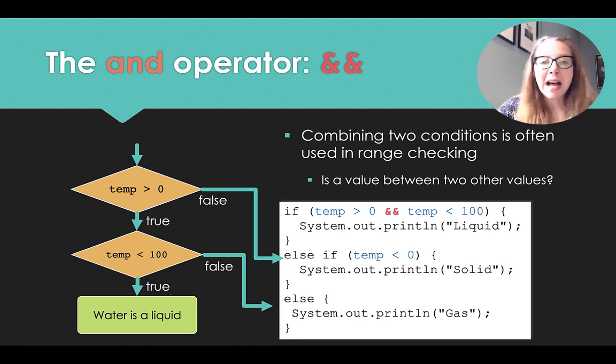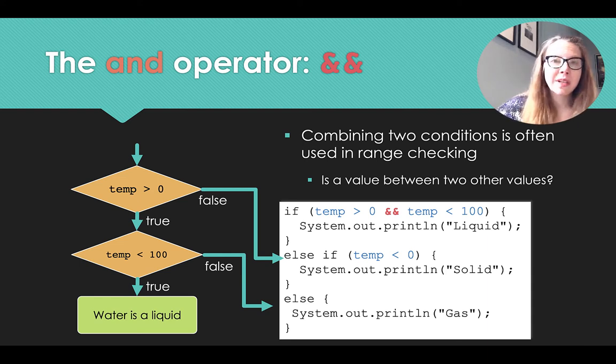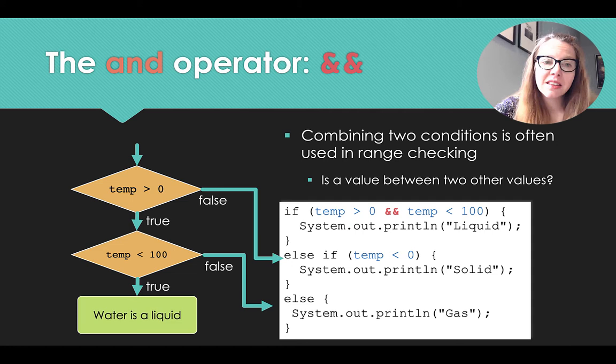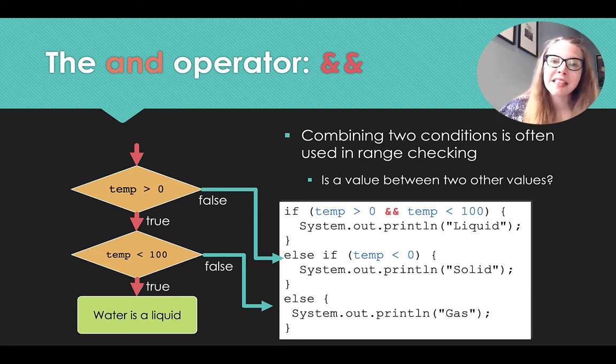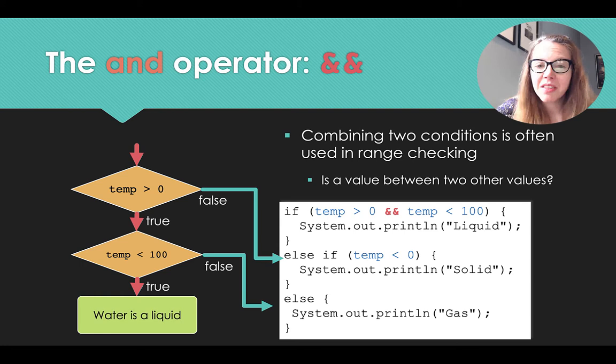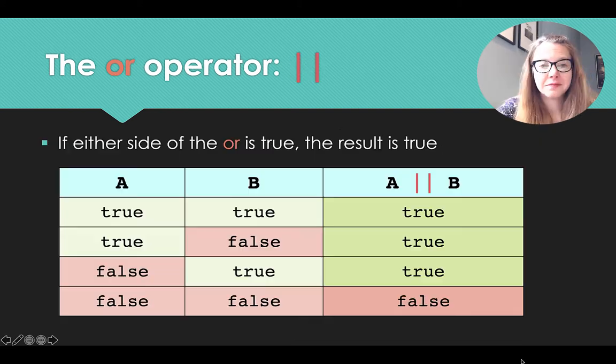The AND operator is used when we're combining two conditions. And it's often used in range checking. So if we want to check that a temperature is between zero and 100 degrees, what we can do is we can apply that AND operator. And so looking at the flowchart on the left, what that means is that AND, we have to follow the true track the whole way down. And then we'll see that the temp is greater than zero, the temp is less than 100, water is a liquid. Other options will fall out of this sequence.